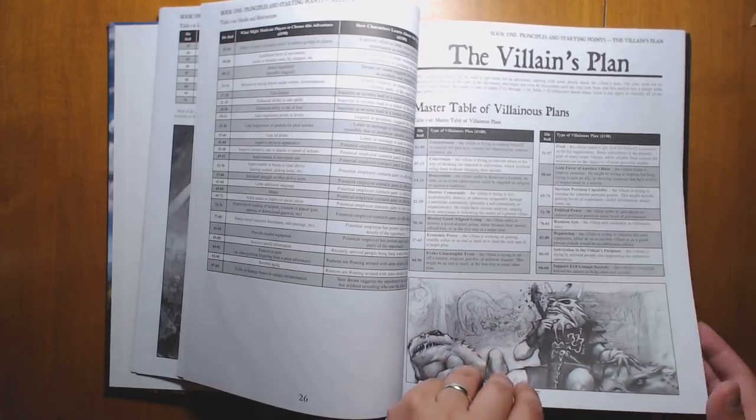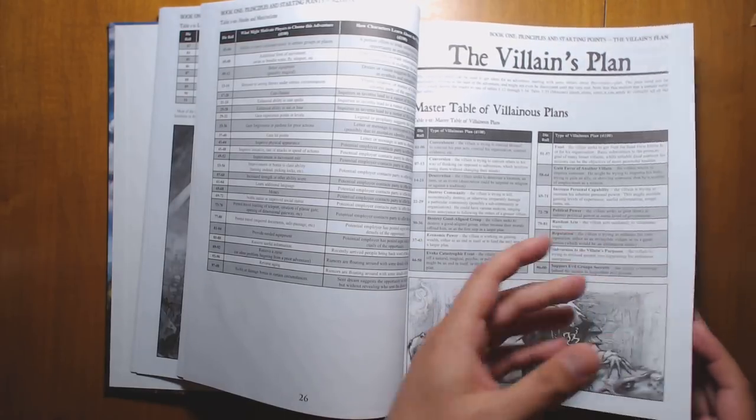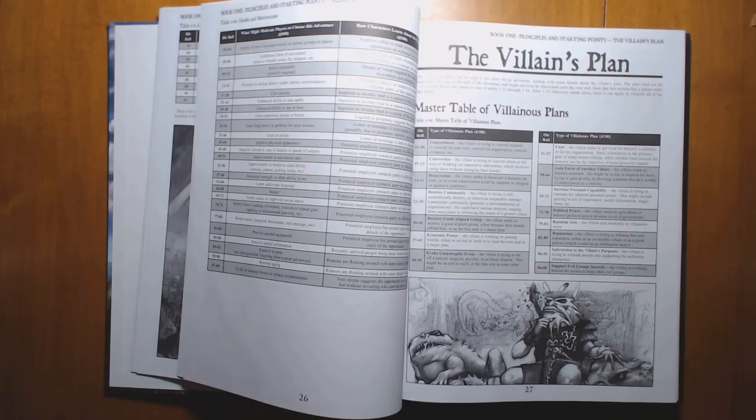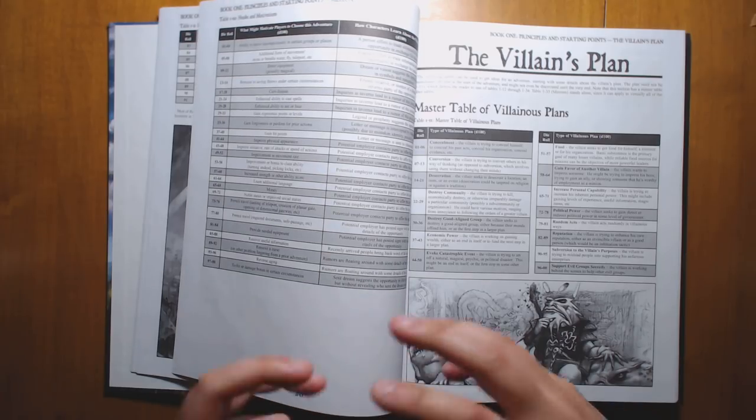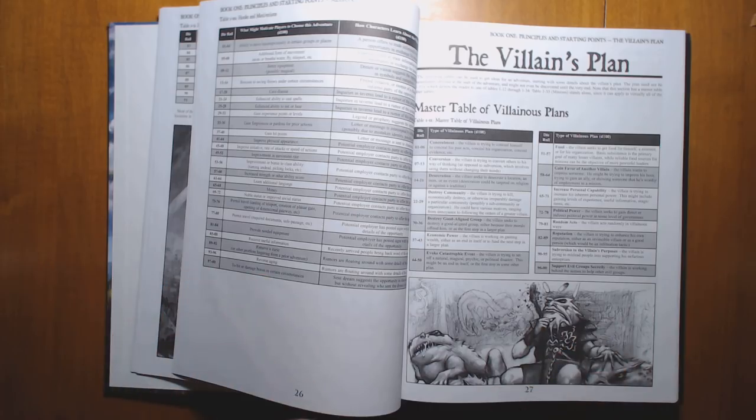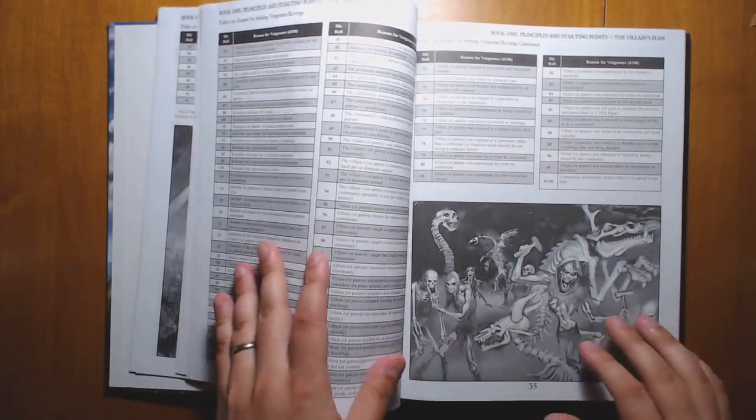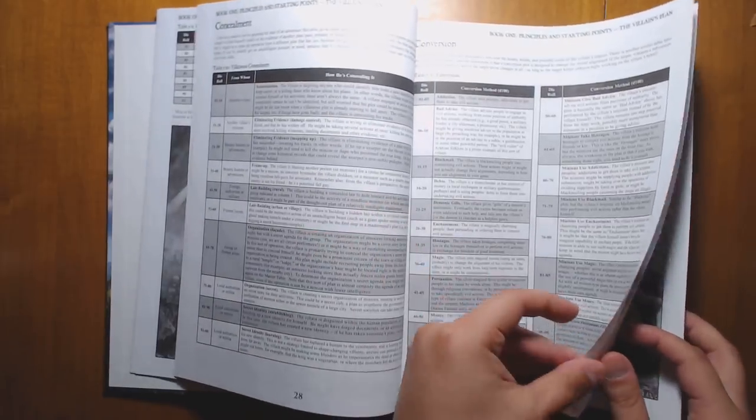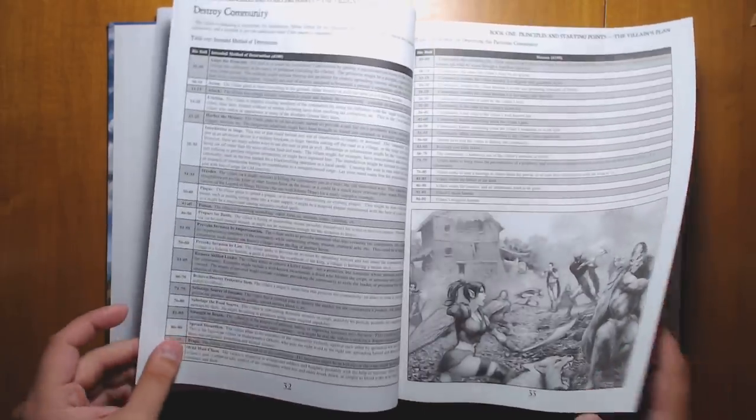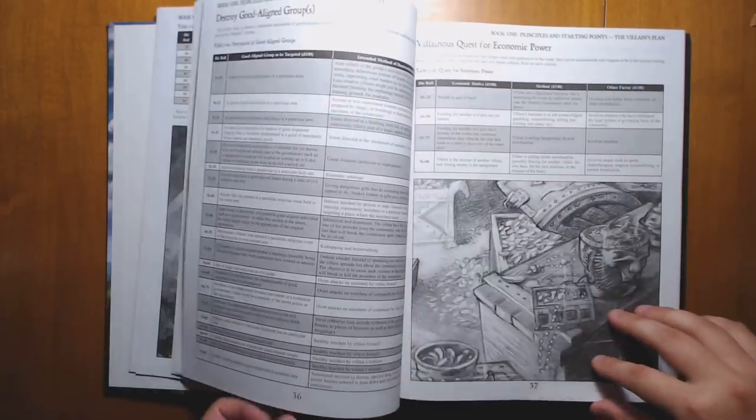Lots of random tables for creating the Villain's Plan. That's an essential part of any campaign. Players need opposition, as mentioned before. And the Villain's Plan is all of those forces in motion that are hindering them. Lots and lots of pages of that. Breaking things into concealment, conversion, desecration, destroying communities, and so on.